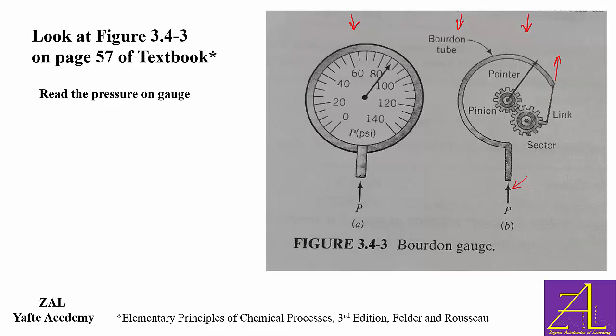Because the tip is connected with a metal link to a gear which is called sector, it tends to make this gear move counterclockwise. And this gear in turn is connected to a second gear which is called pinion. As a result, it makes the pinion move clockwise and will move the pointer clockwise as well.